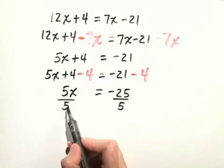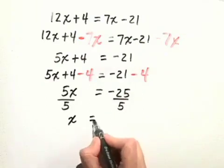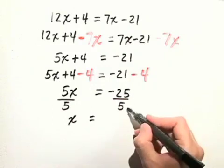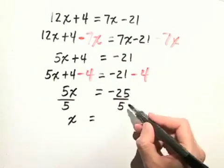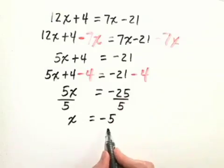When we do that, the 5 divided by 5 gives us 1, so we have 1x or just x is equal to negative 25 divided by positive 5. A negative divided by a positive is a negative, and our answer will be x equals negative 5, or we can write the solution set as negative 5.